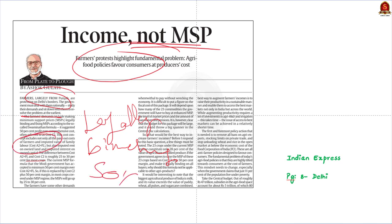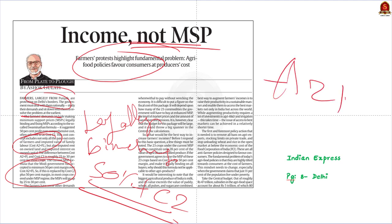Cost C2 includes all costs — family labor, rent on owned land, and interest on owned capital. The current MSP formula accepted by the present government ensures a minimum 50% margin over Cost A2 plus FL. If the formula changes to Cost C2 plus 50% margin, the MSP for almost all crops could increase by 25 to 30%. This is an important demand for the farmers.